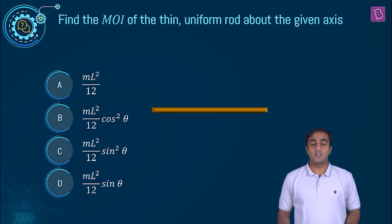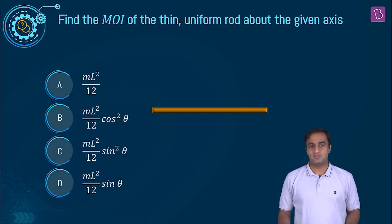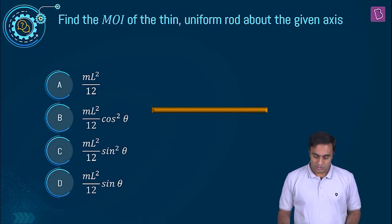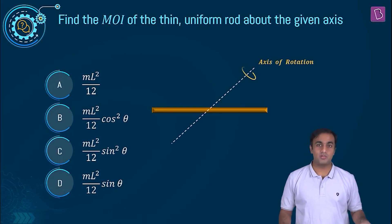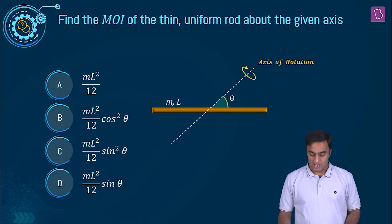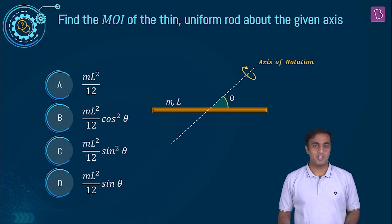Here we have a question on calculation of moment of inertia but with a twist. We are given a thin uniform rod and we are asked to calculate the moment of inertia of this thin uniform rod about the given axis of rotation.